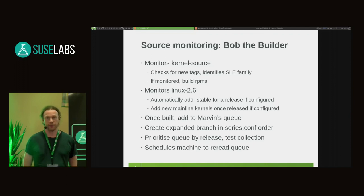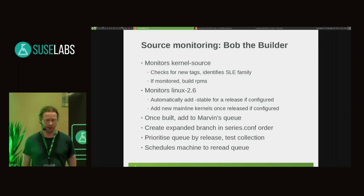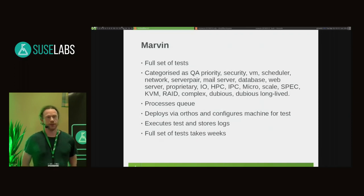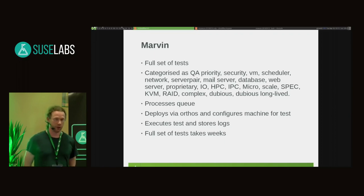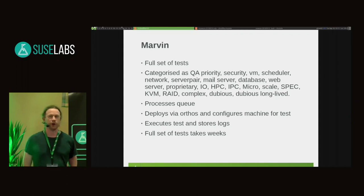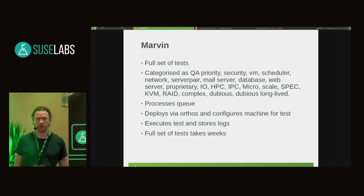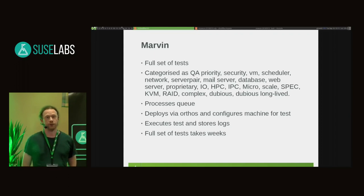Tests are prioritized based on the SLEE family — SLEE is tested before OpenSUSE. Tests are done in different collections that are ordered by priority: high priority and low priority. There is a QA performance team responsible for actively monitoring performance and reporting bugs to us. We have a test collection called QA priority, which closely matches the tests they run. There are also security tests run with mitigations enabled, VM-oriented ones, scheduler, network, pairs of servers for network-oriented tests. The proprietary ones are nearly all SAP workloads and are not published externally, but are included in the middle of the priority order.